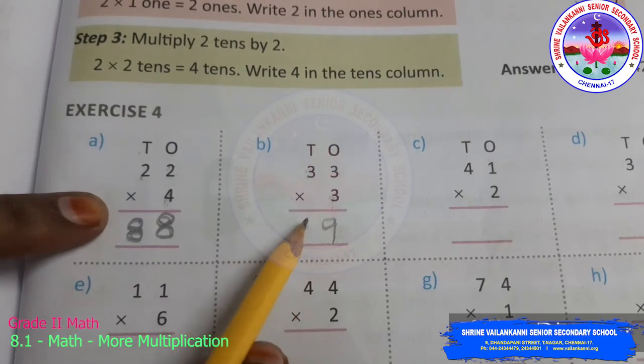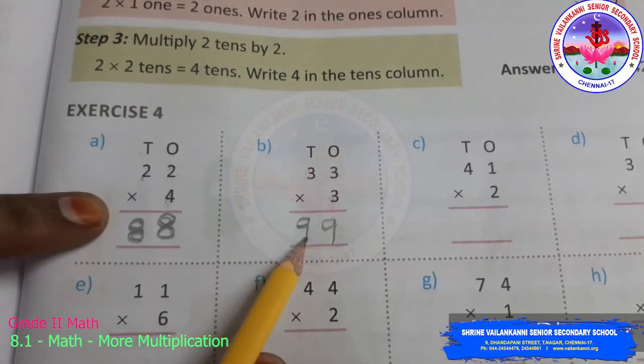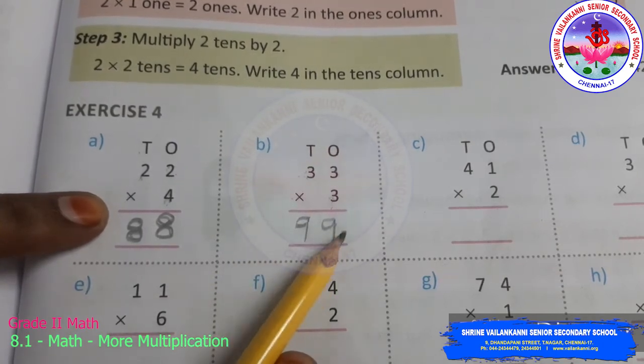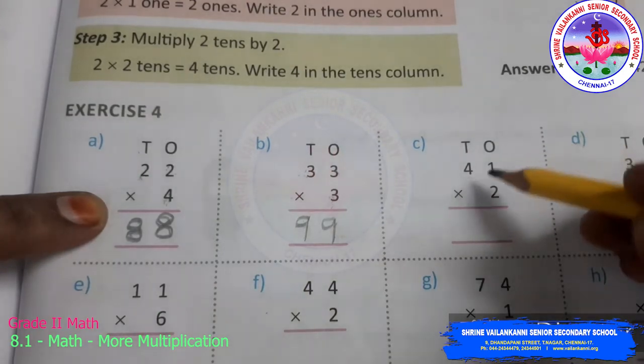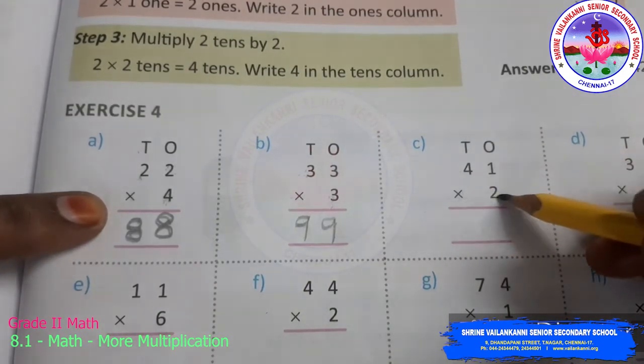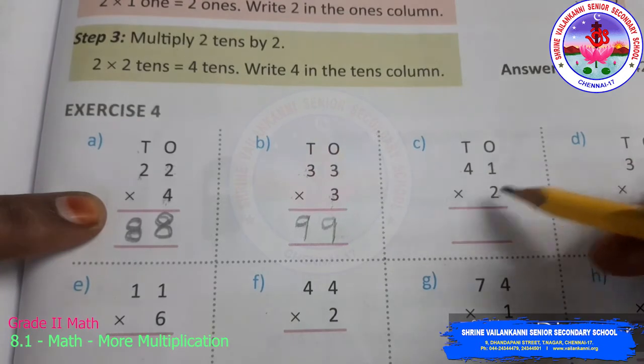Now, tens part. 3 into 3. Nine. So, 33 into 3 is 99. Now, we will see this sum. 41 into 2.